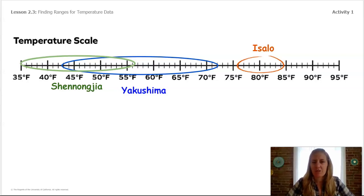Are the temperatures similar for each individual place? Meaning, if you just look at Isalo, are the temperatures about the same?